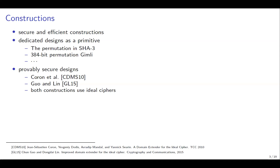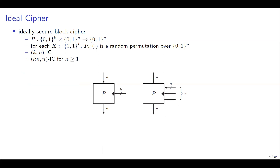In this work, we are interested in provably secure designs. There are constructions by Kolomon et al. and by Go and Ling, and both constructions use ideal ciphers. An ideal cipher is an ideally secure block cipher — a mapping from K-bit keys and N-bit plaintexts into N-bit ciphertexts. If we fix the key K, then P_K is a random permutation over N bits.